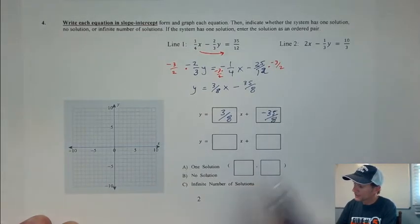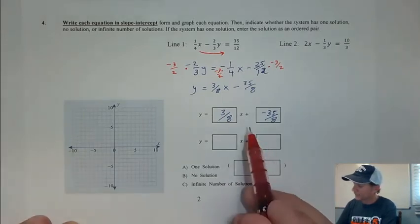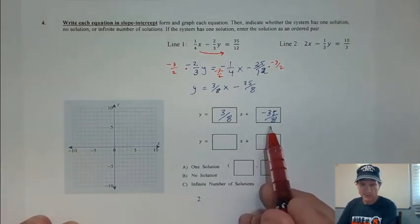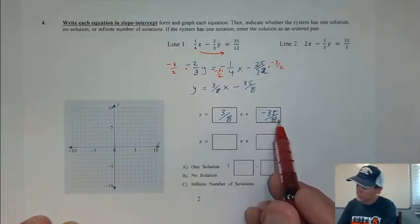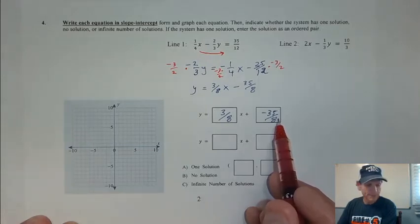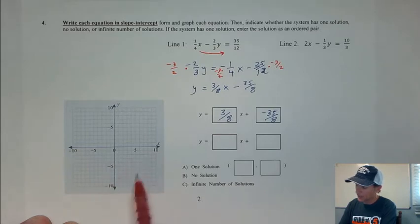This is another nice little example of why the graphing method is kind of a pain sometimes. Because to graph this, boy, to plot this spot, this starting point, negative 4 and 3 eighths, it's quite difficult to get that estimate of where that's at on this graph.